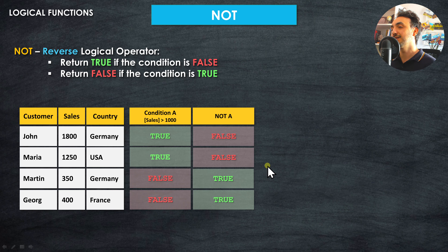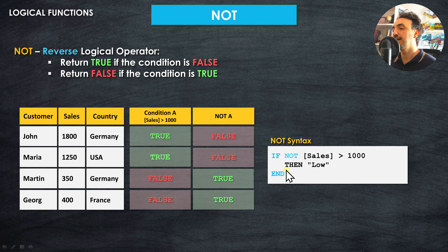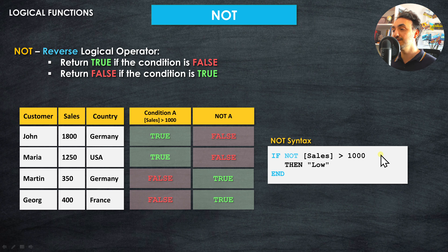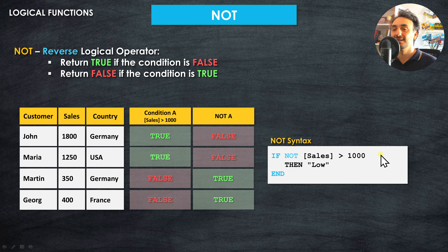For the last two customers, the condition result is false, so NOT gives true. The result is flipped — we get exactly the opposite. In a Tableau calculation it looks like this: we have the IF statement, and just before the condition we put NOT, reversing everything. So if the sales is NOT higher than 1000, we get the value 'low' — meaning anything equal to or smaller than 1000 will be 'low'.